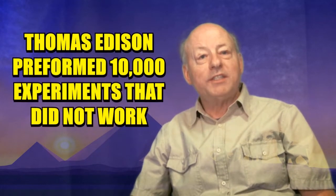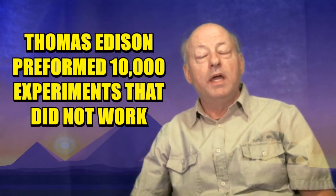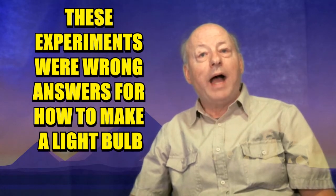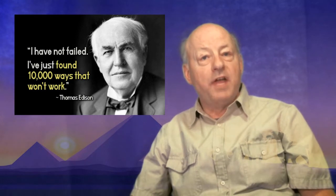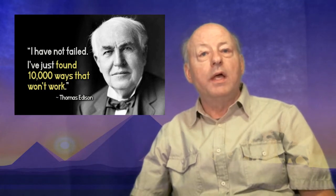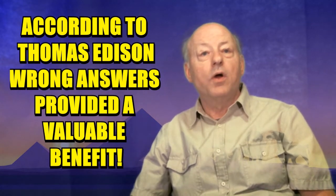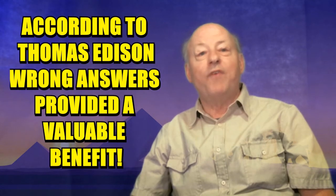Thomas Edison used the scientific method and performed experiments to develop a working light bulb. In the process, he performed 10,000 experiments that did not work. Each of these 10,000 experiments was a wrong answer to the question, how is a working light bulb made? Edison contended that 10,000 failed experiments — wrong answers — were very helpful. He was able to discard ideas that were not valid, and wrong answers provided a tremendous benefit.